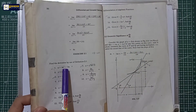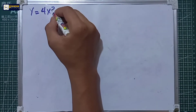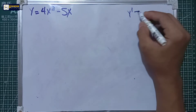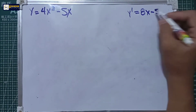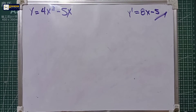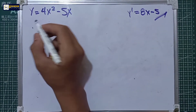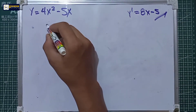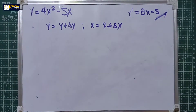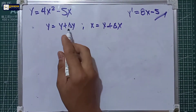Now that we understand the process of the four-step rule, let's try Exercise 2.1 number one. In number one we have y is equal to 4x squared minus 5x. Using the short method or by use of formulas, the answer must be y prime equal to 8x minus 5. In step number one, find y plus delta y equal to the function of x plus delta x. Step one is by letting y equal to y plus delta y, and x equal to x plus delta x.